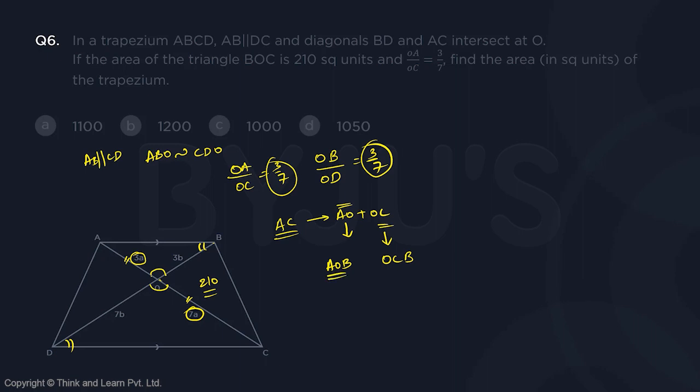Now, if you notice, that both the triangles will have the same height. Why? Because it is the same straight line. So the height for both the triangles will be this part. And this is the same height. So you have two triangles whose height is the same, which means their areas should be in the ratio of their sides.